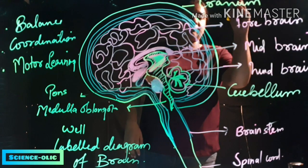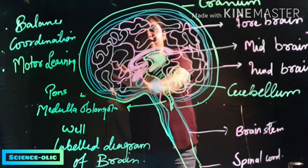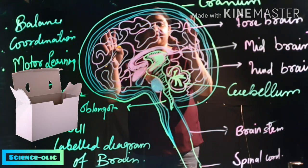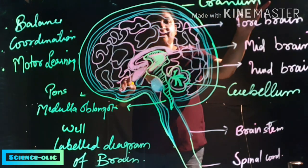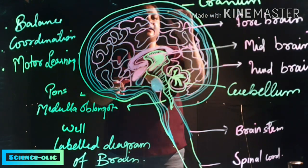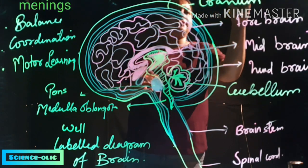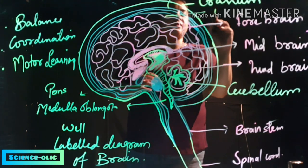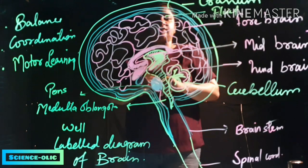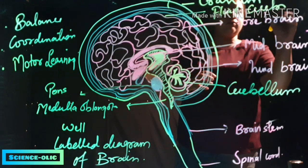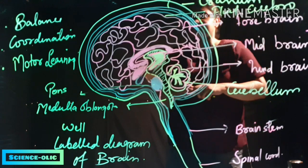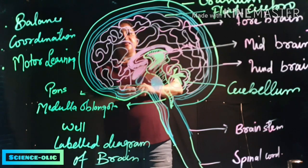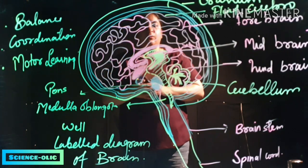The brain is covered with the cranium. This can be imagined as an empty box — the brain is placed inside this empty box. The brain is also covered with the meninges, which protect the brain. There is also fluid present inside it, known as the cerebrospinal fluid. This is all about the brain.